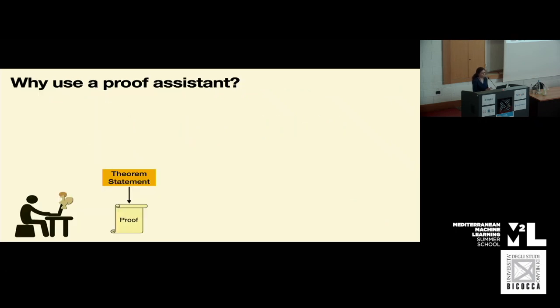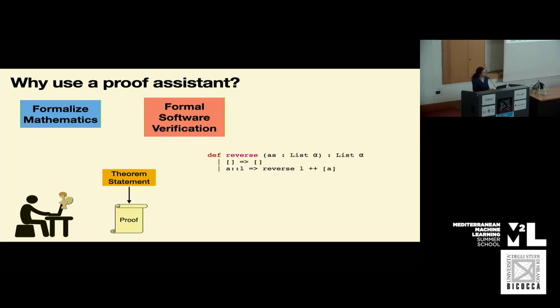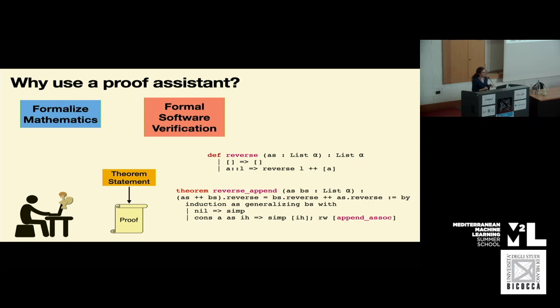So why would someone want to use a proof assistant? Two popular applications include formalizing mathematics and formally verifying software. To formally verify software, a programmer can write their software, specify a theorem about a property of their software, and attempt to prove that their code adheres to that theorem. For example, they can define a list data structure and write functions on lists like reverse, then try and prove properties about the behavior of the reverse function.